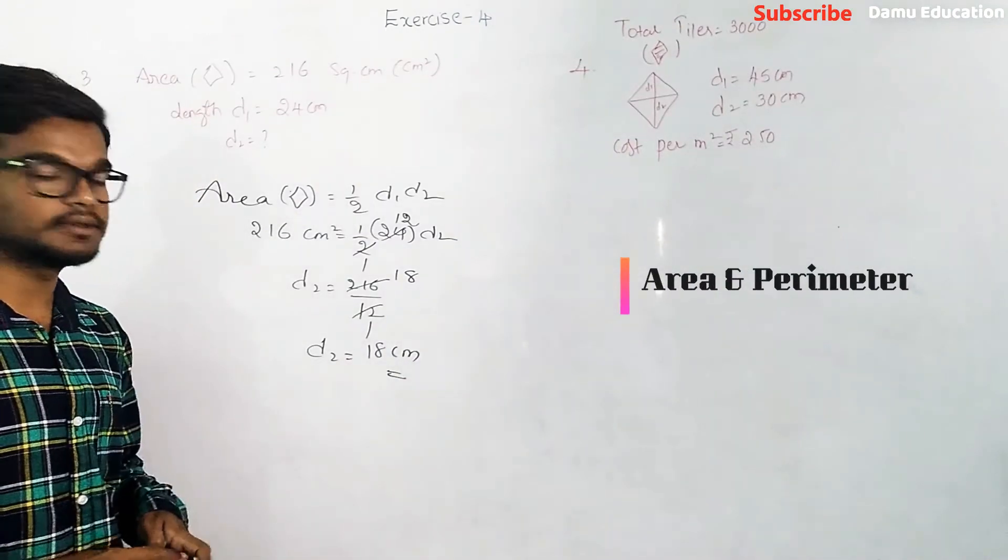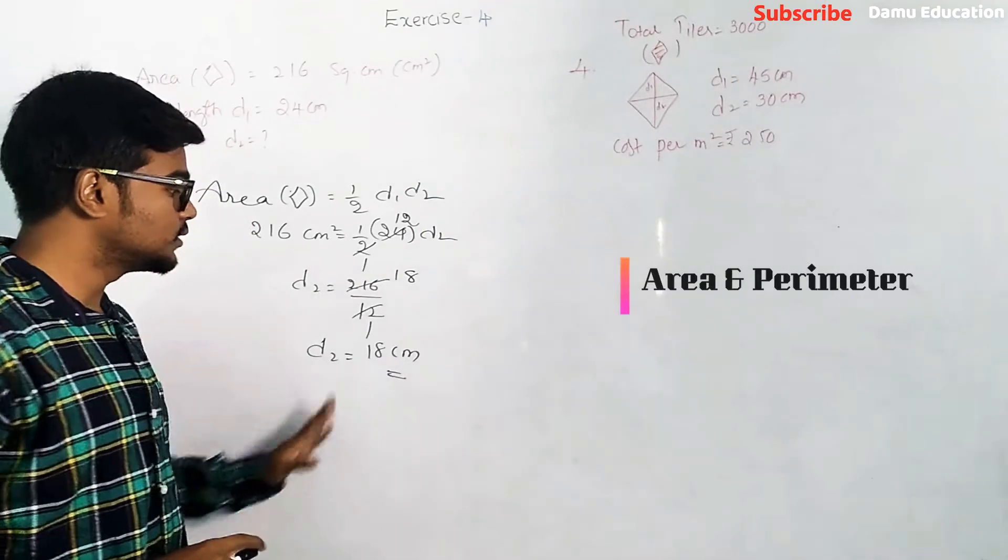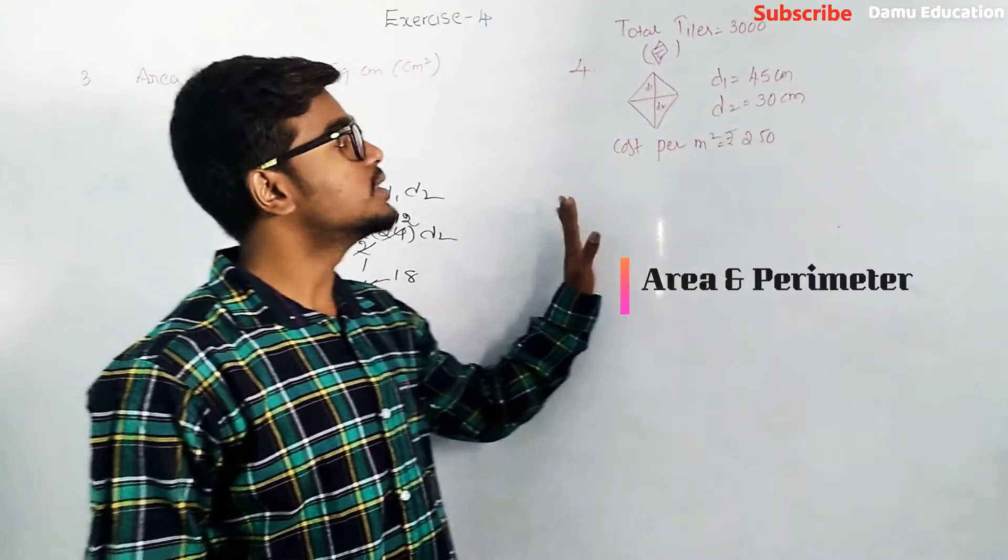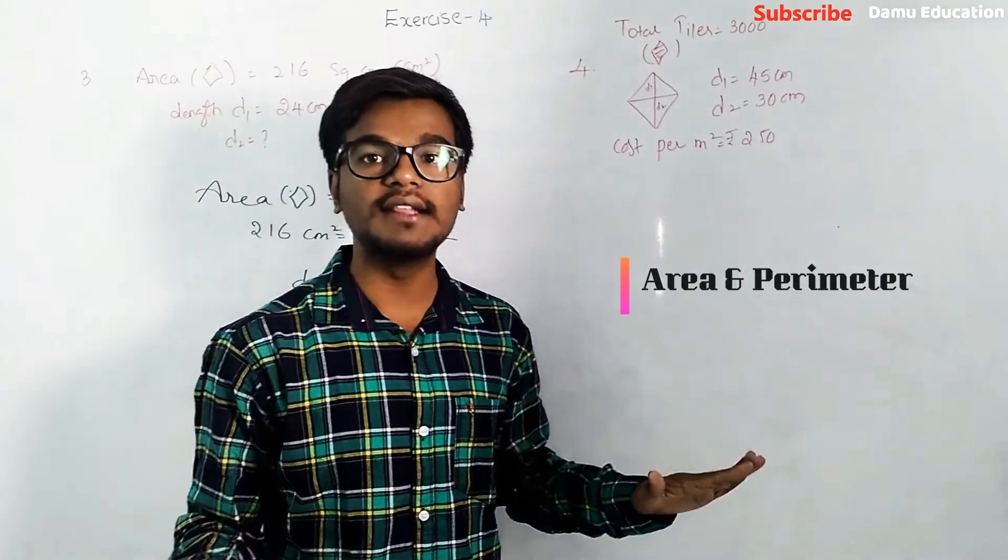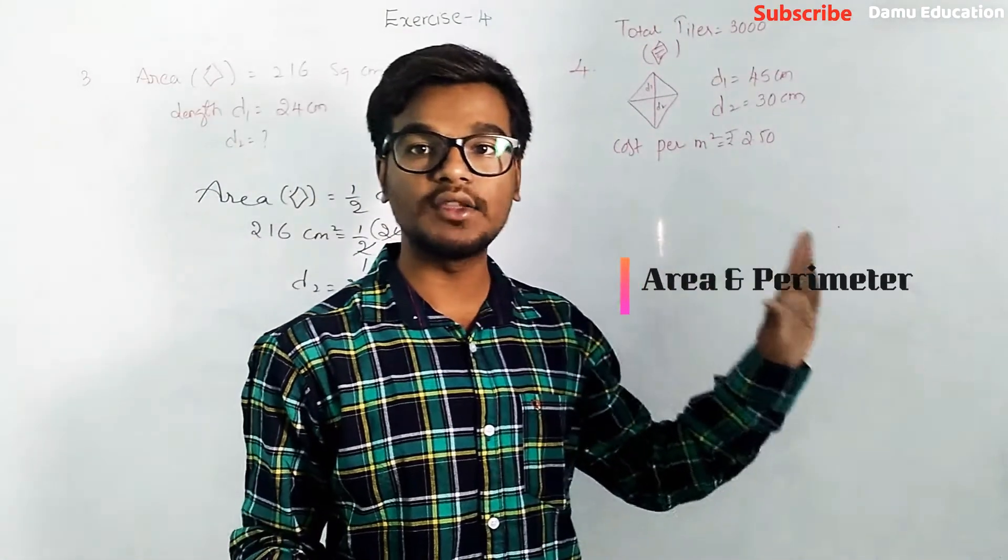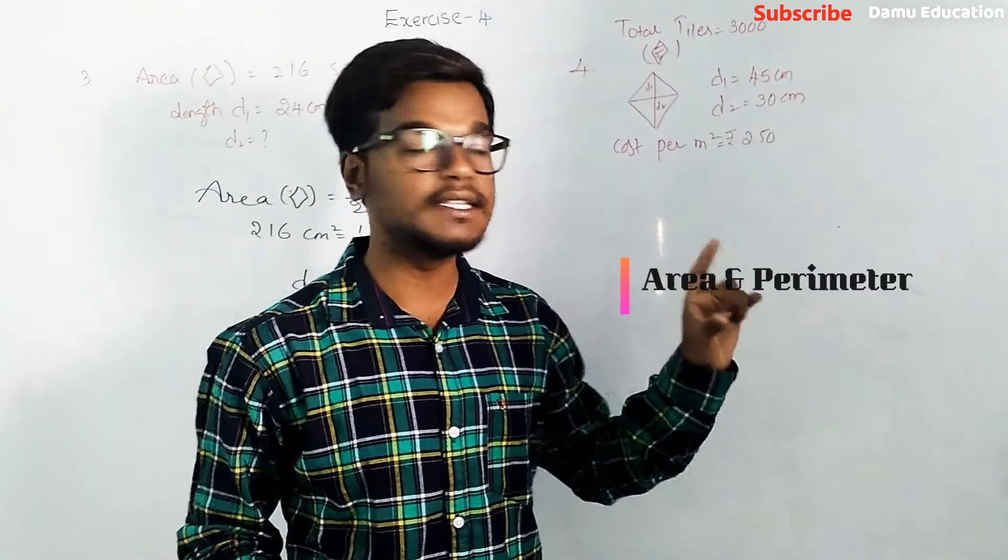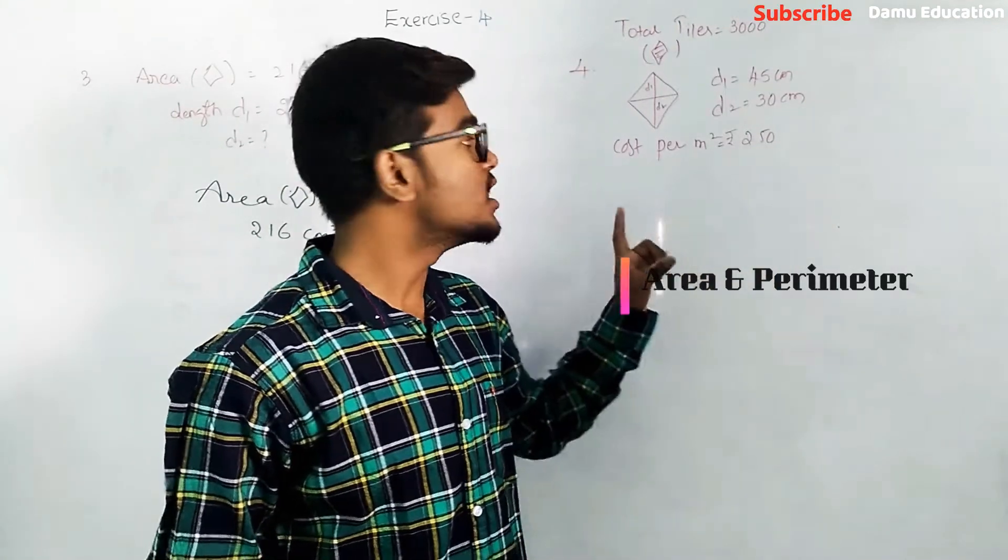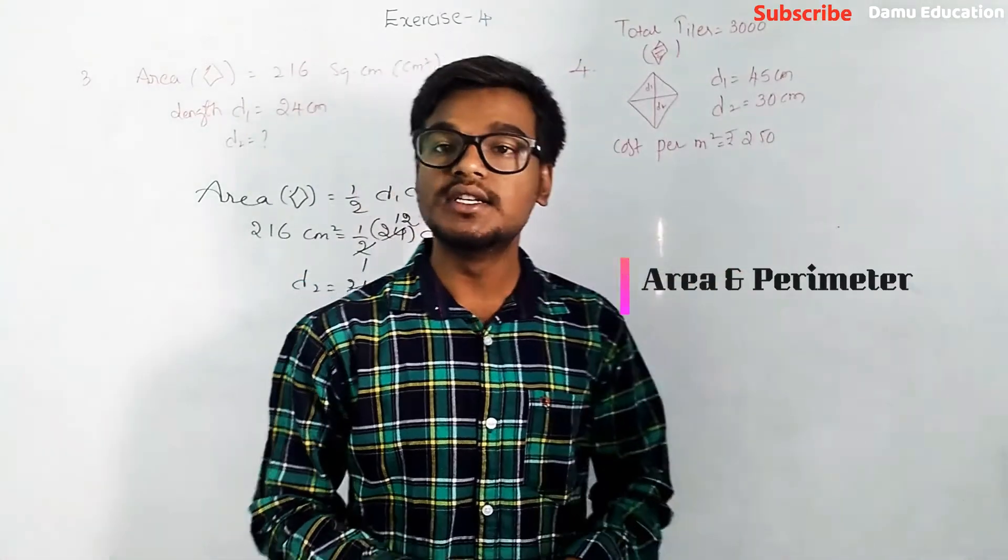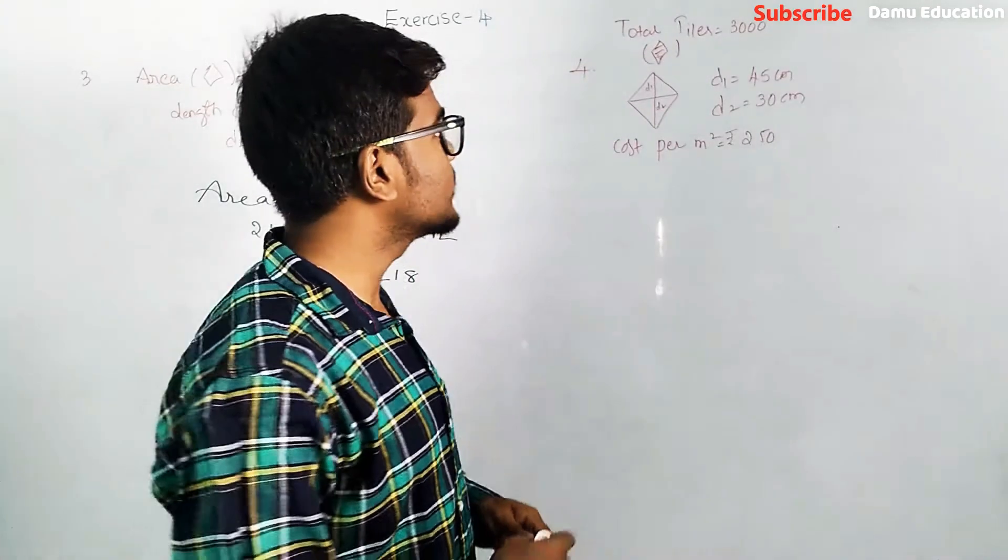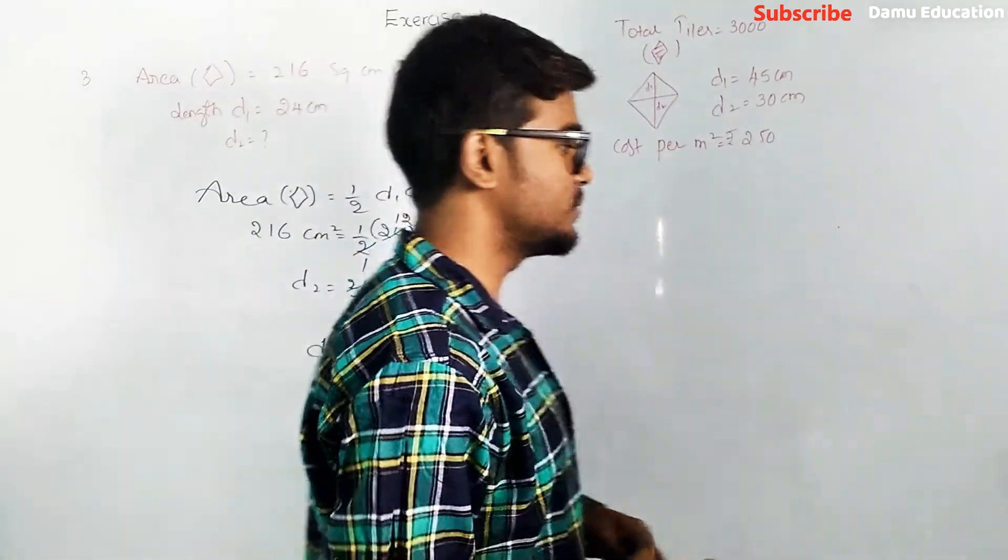Then what is our next question? They are given the floor which will consist of rhombus-shaped tiles, 3000 tiles. Each diagonal they are given as 45 and 30 centimeters. What is the cost per square meter? Per square meter is 2.50 rupees.